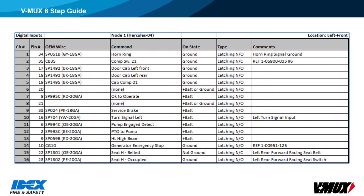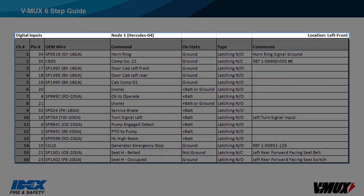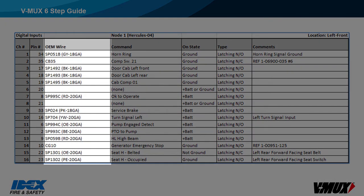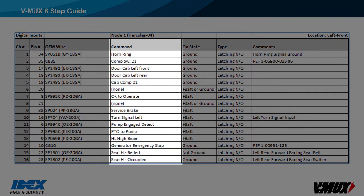Here is an example of node inputs in a relationship report. At the top, it indicates that it is for digital inputs on node 1, a Hercules node. Node location, shown in the upper right corner, can be left, center, or right, and front, mid, or rear. The first two columns are channel number and the connector pin number. It is up to the vehicle builder to decide what gets shown in the OEM wire column — in this case it shows wire number, color, and gauge. The command column shows what VMux command will be sent when that input gets activated.